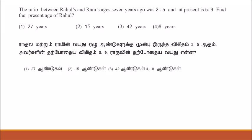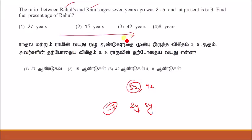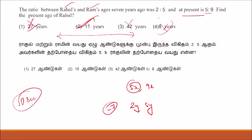The ratio between Rahul and Ramsey's ages 7 years ago was 2x to 5x. At present it is 5x to 9x. So we have 2i to 5i — that is 7 years back. Find the present age of Rahul. In the options, the present age of Rahul — knowing that the values are multiples of 5 — we look for the option. But the actual method requires equations.